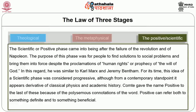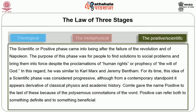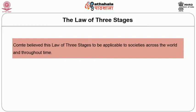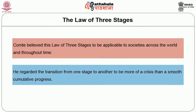The final scientific or positive stage came after the failure of the revolution and of Napoleon. The purpose of this phase was for people to find solutions to social problems and bring them into force despite the proclamations of human rights or prophecies of the will of God — a regard similar to Karl Marx and Jeremy Bentham. Comte gave the name 'positive' to the last of these stages because of the polysemous connotation of the word: positive can refer both to something definite and to something beneficial. He believed this law of three stages applicable to societies across the world and throughout time, and regarded the transition from one stage to another as more of a crisis than a smooth cumulative process.